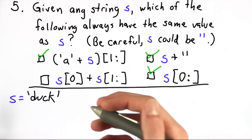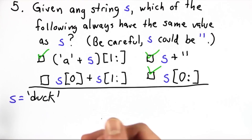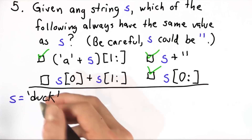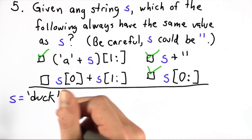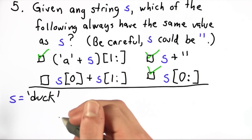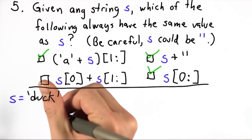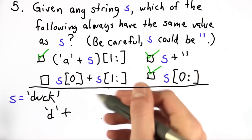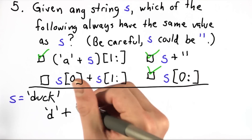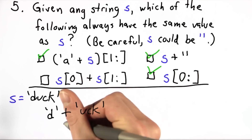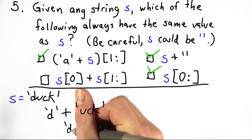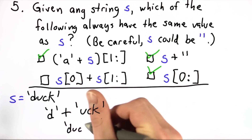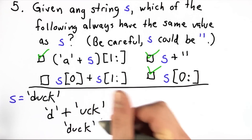For the second choice, let's just plug in 'duck'. The first character, the 0th character in 'duck', is going to be 'd'. And we're going to concatenate that with the rest of the string, giving us back our original string 'duck'.